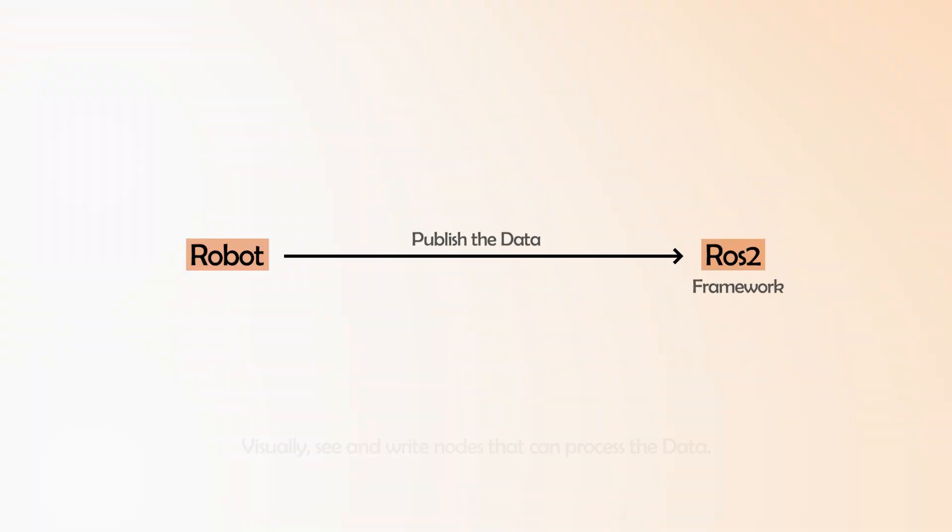This step helps you to publish data from your robot into the ROS 2 framework so you can visually see and write nodes that can process the data. This then connects more information from your robot to the ROS 2 system.